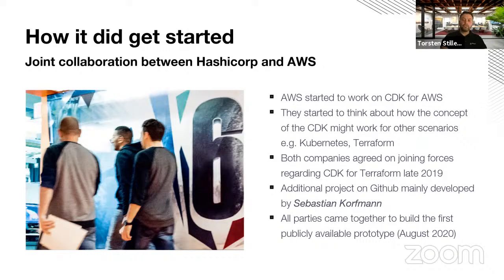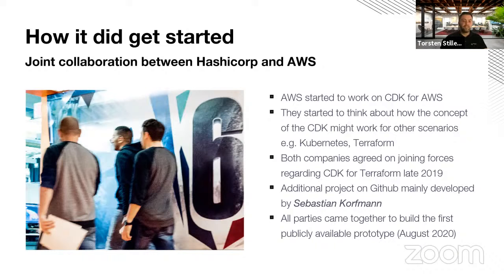This also inspired the creation of JSII, which became a key platform component for all CDKs. Amazon decided to make an official project out of it and released the developer preview in August 2018. The general release announcement was in July 2019. End of 2019, they started thinking about how the CDK concept might work for other scenarios like Kubernetes and Terraform. At that time, there was also a community-driven prototype on GitHub focused on using the CDK concept for Terraform purposes.